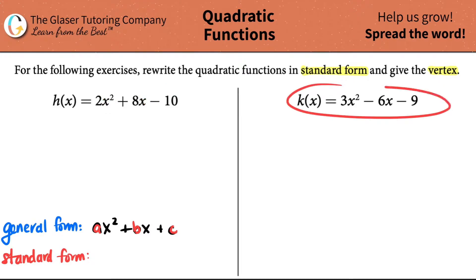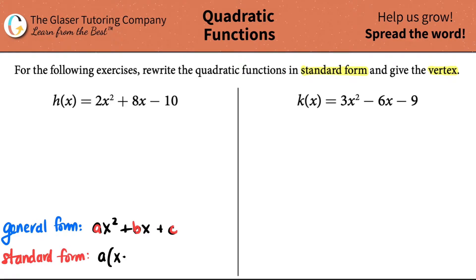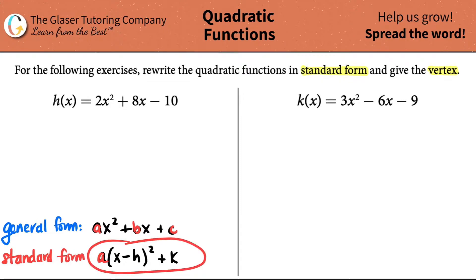The standard form is a little bit different. This one is represented by a times x minus h, all squared, plus k. There are some similarities — they both have an a value. However, there is no b and there is no c in the standard form. Instead, there are h's and k's.